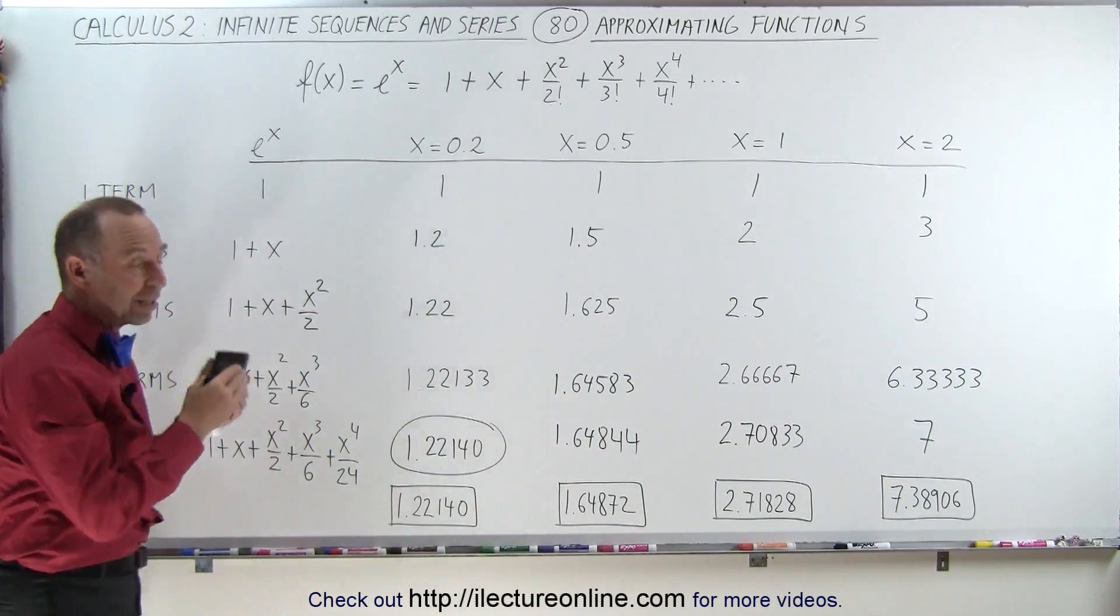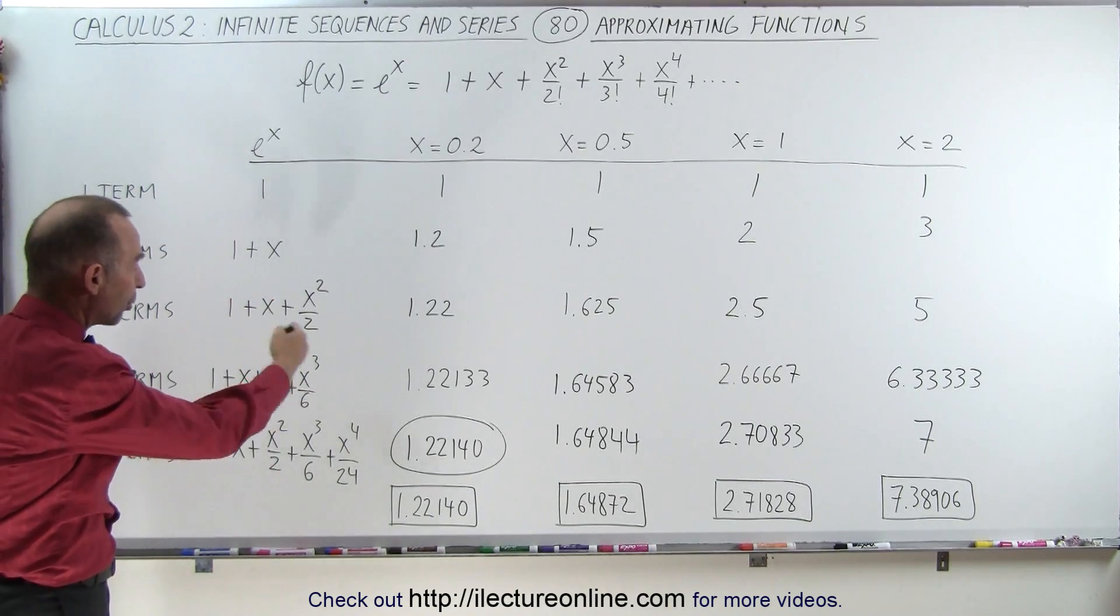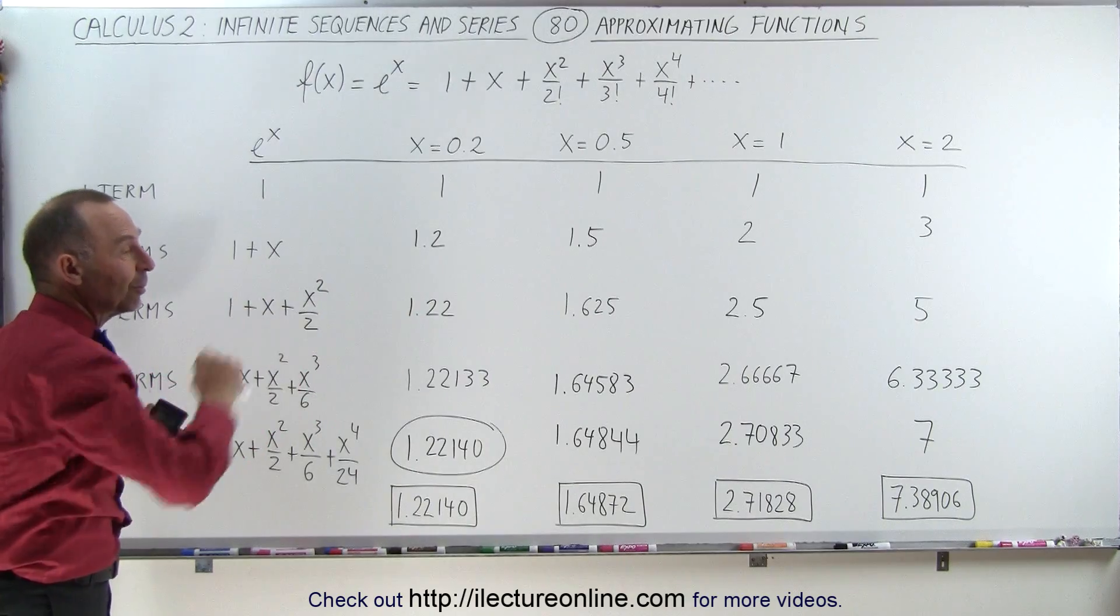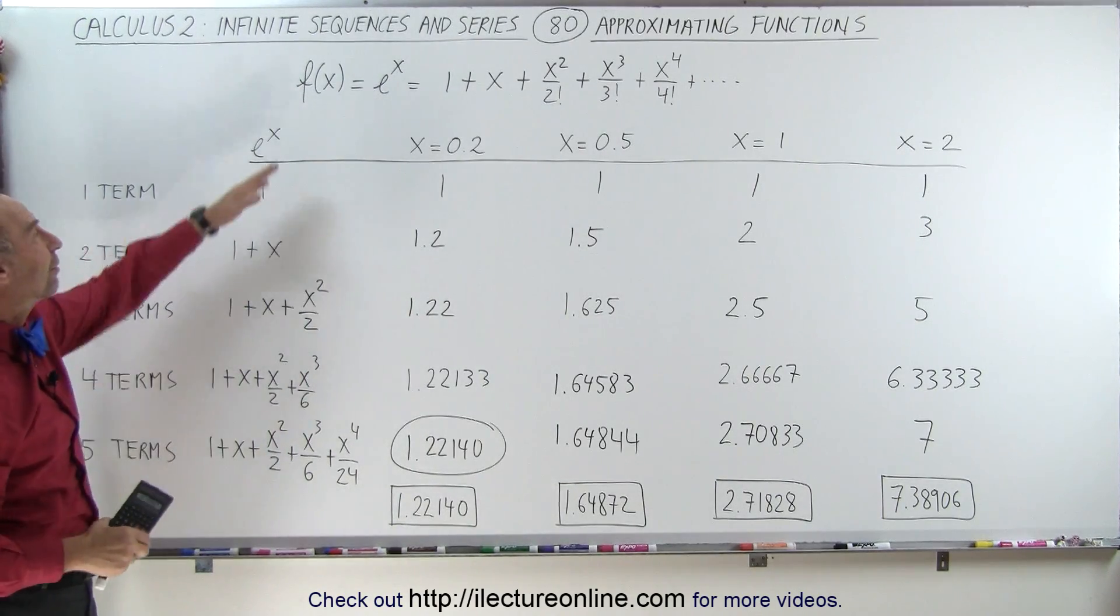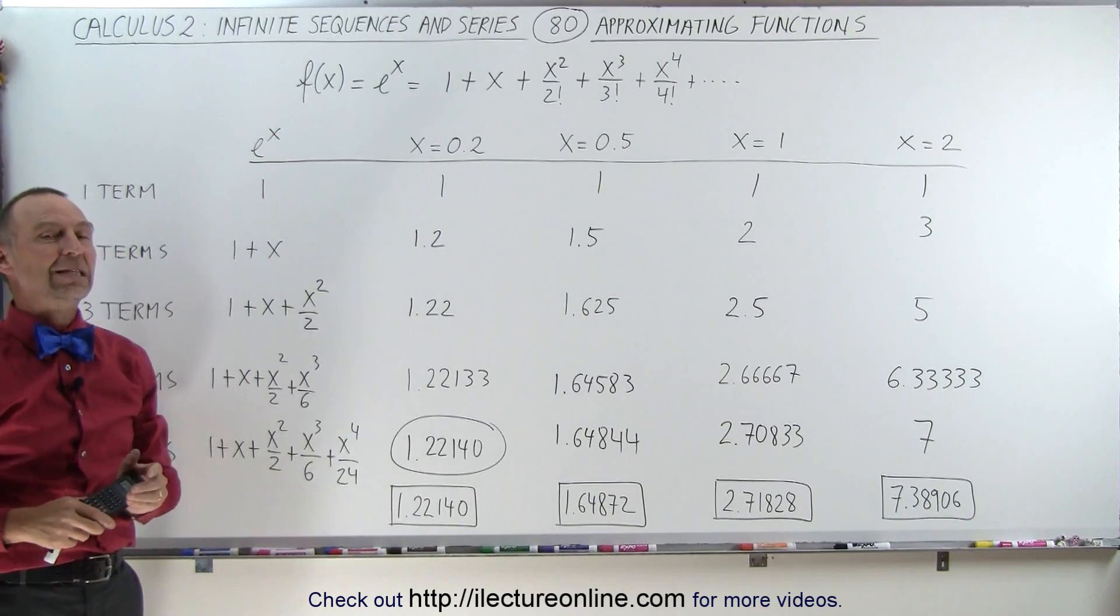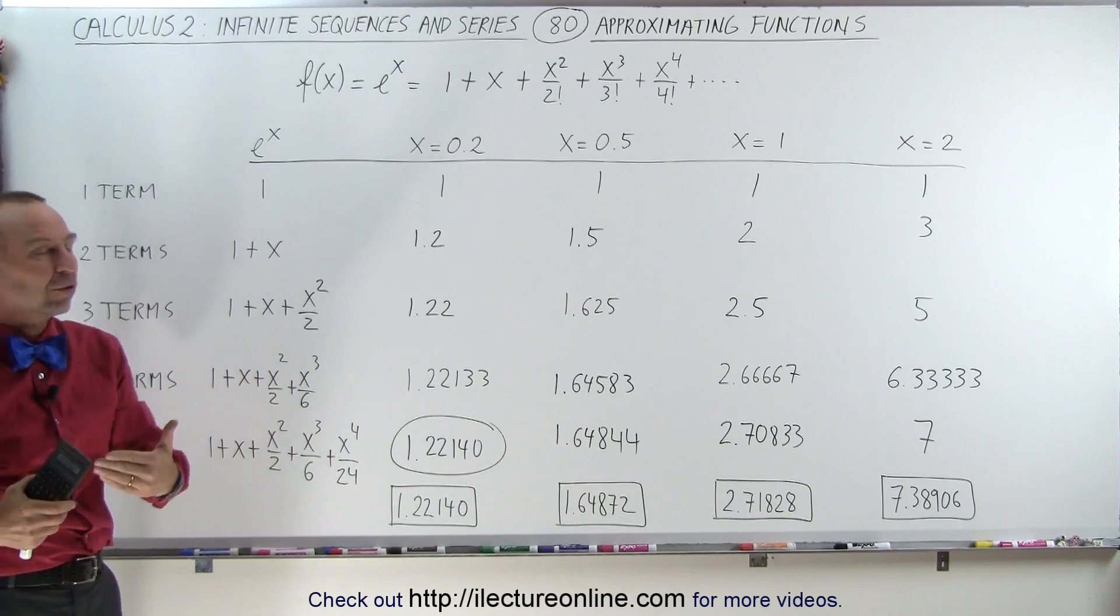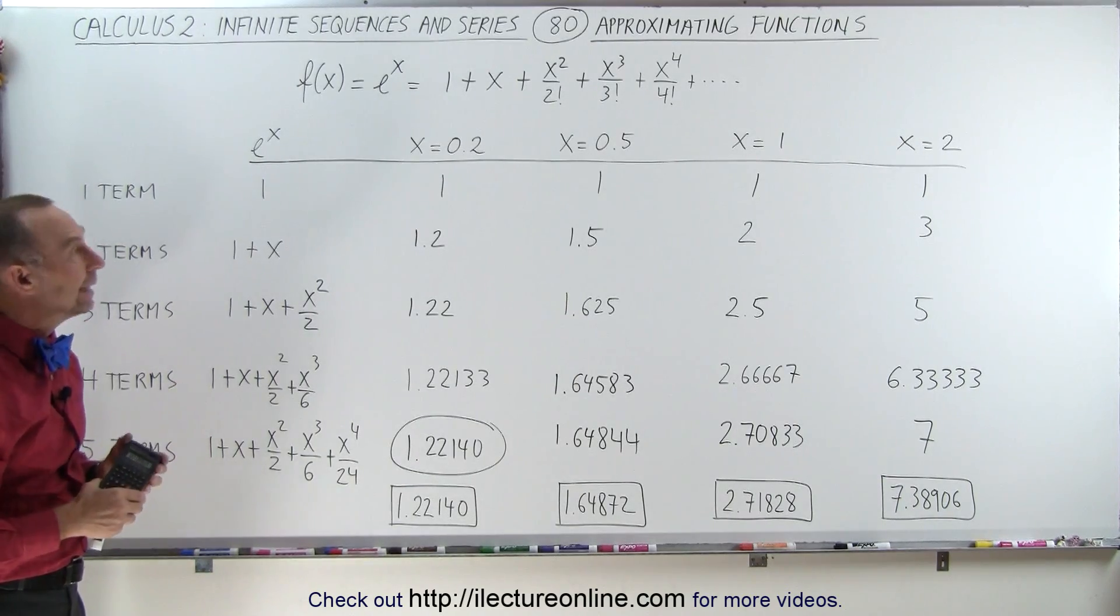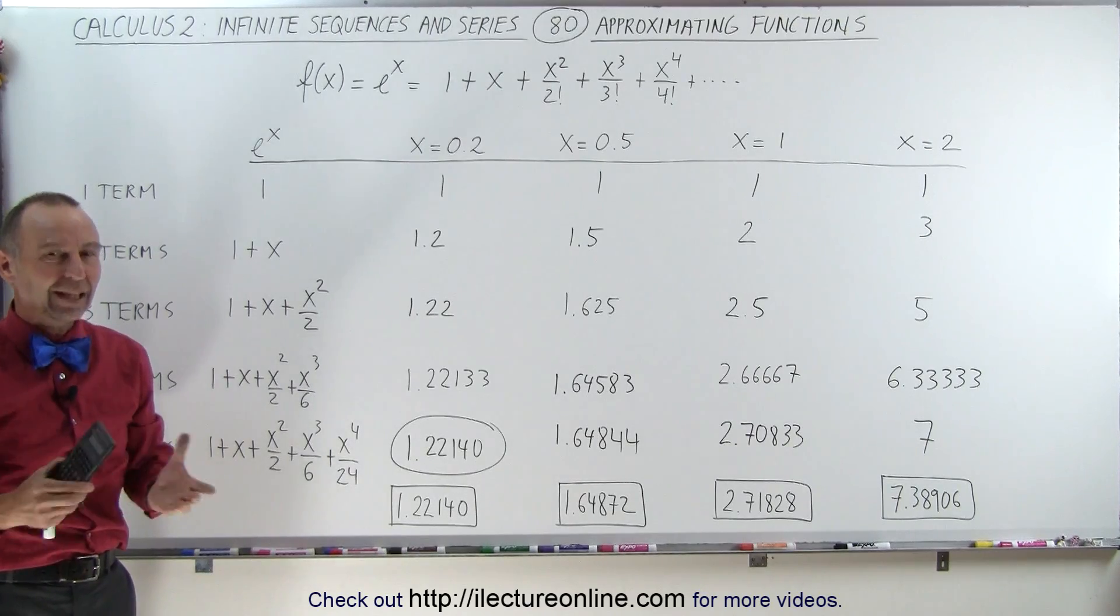So you can see that as the value for x diverges more and more from x equals 0, it takes more and more terms to get to a reasonably accurate value to a certain number of decimal places for the evaluation of the function f(x) = e^x. And understanding this will help us understand the rules and laws of Maclaurin and the Taylor series, as we'll see in the videos to come. And that's how it's done.